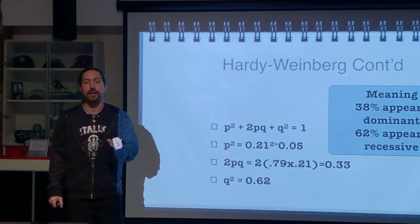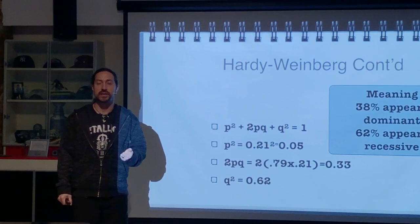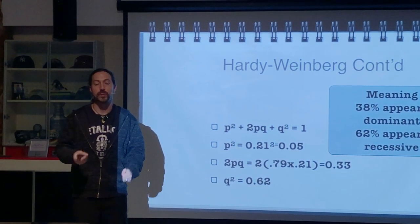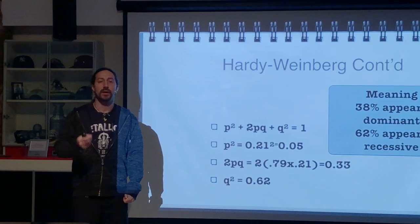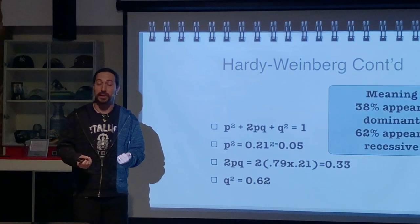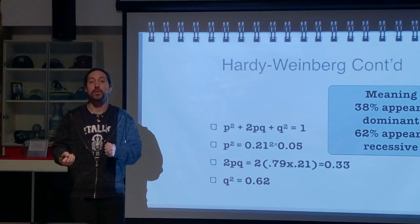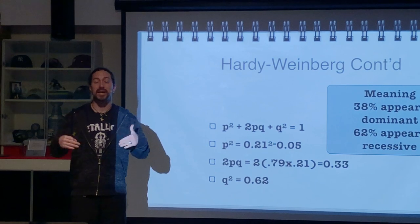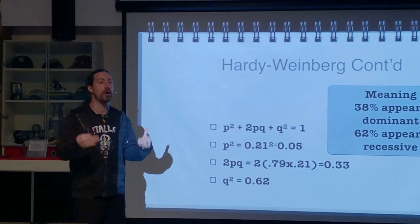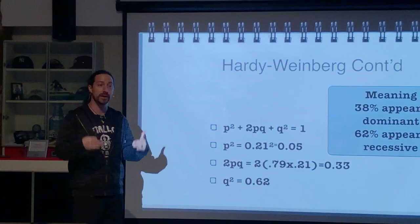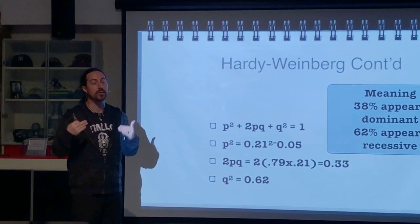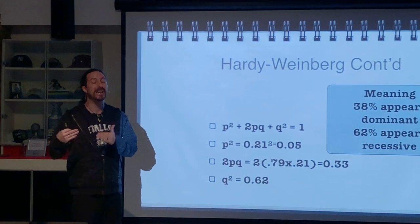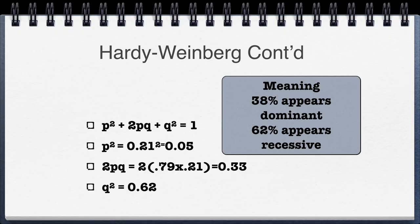We started with homozygous recessive individuals because the trait exhibits complete dominance. With incomplete dominance or codominance, you could start at a different point. But with complete dominance, you must start with the homozygous recessive individuals — they're the only ones whose genotype you can determine from phenotype alone. Dominant-phenotype individuals could be either heterozygous or homozygous dominant.